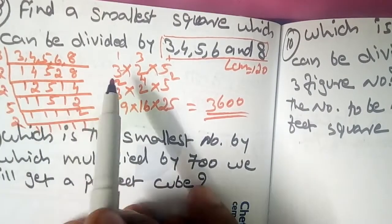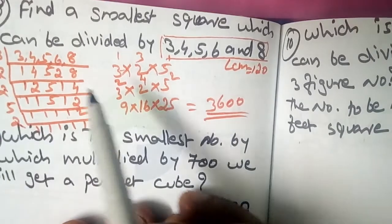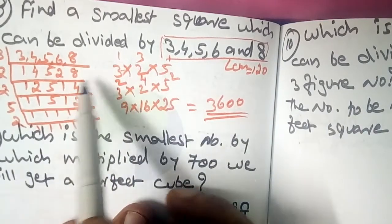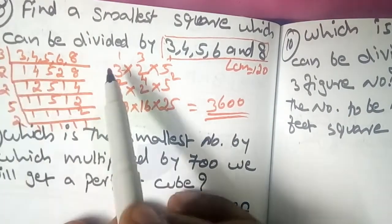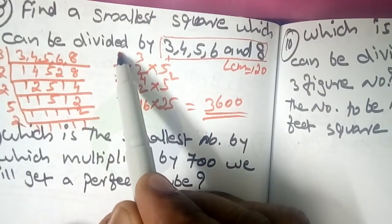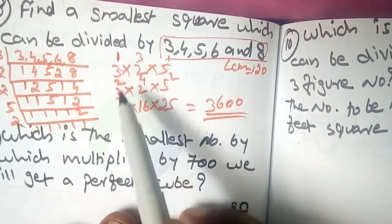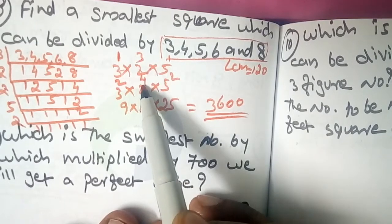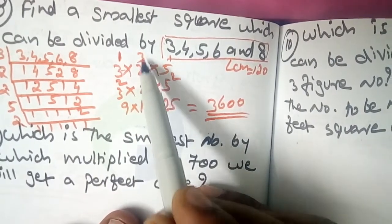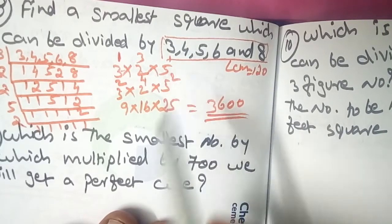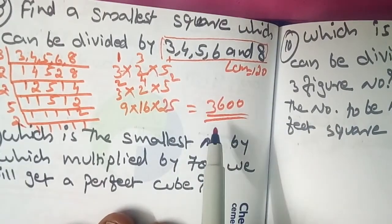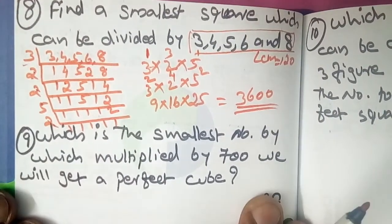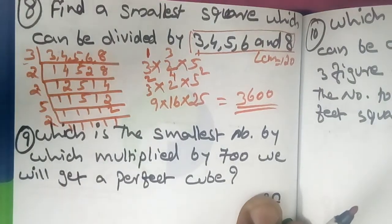LCM is the square. That means the smallest perfect square divisible by 3, 4, 5, 6, and 8 is 3600. So let's see — this is how we find it. Here, I will go to the next class.